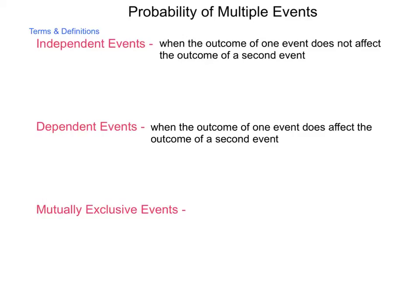And last, we have mutually exclusive events. And these are two events that cannot happen at the same time. Exclusive means on their own. Mutually exclusive means each one happens by itself. So we're going to be looking at these as we build on this idea of probability of multiple events.